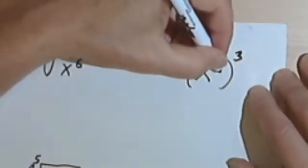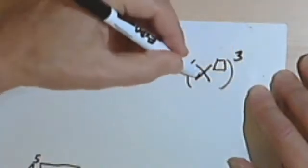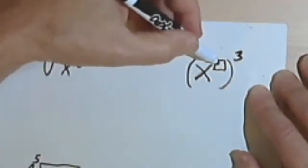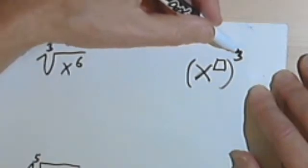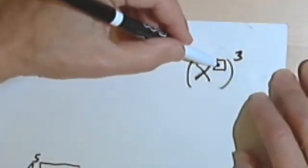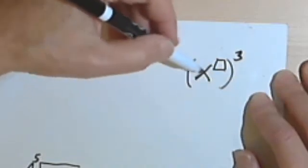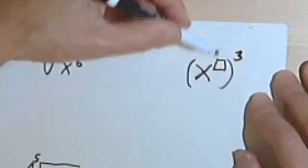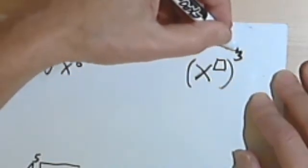there was this rule that says that if I have a variable or a number raised to a power, and it's raised to a higher power, I multiply the exponent over here inside the parentheses, you could say, and the exponent outside the parentheses.